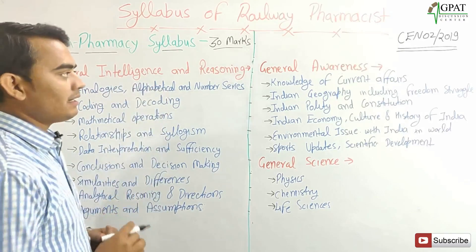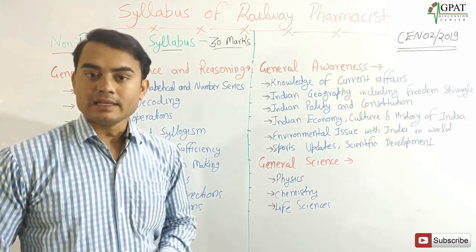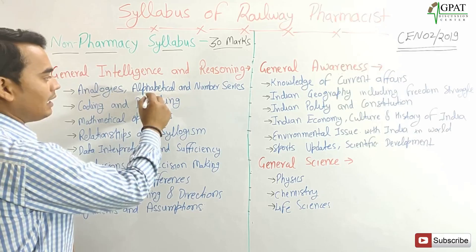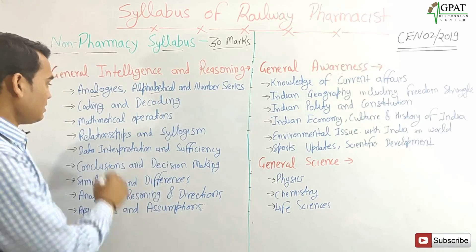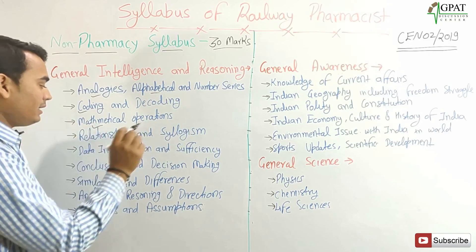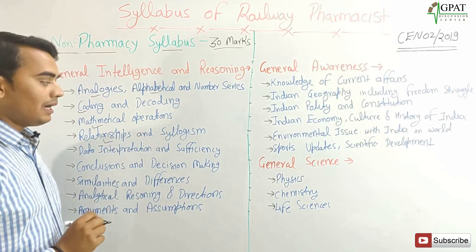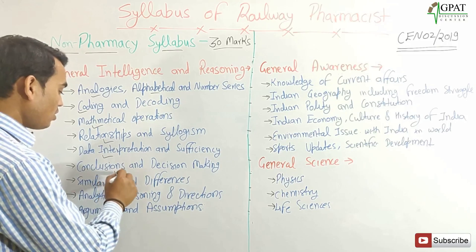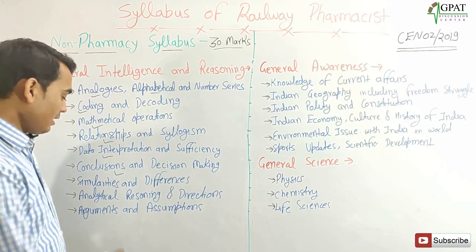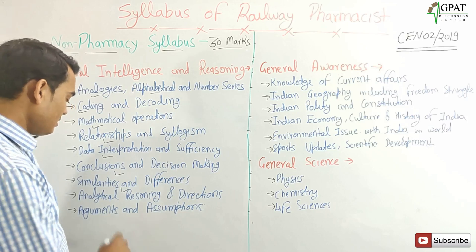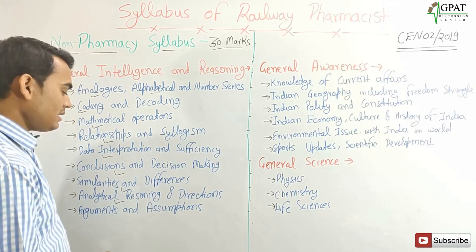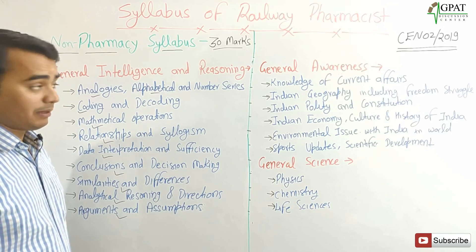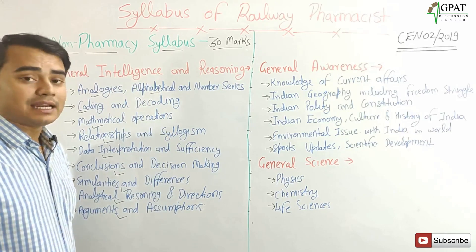Under General Intelligence and Reasoning: Analogies, Alphabetical and Number Series, Coding and Decoding, Mathematical Operations, Relationships and Syllogism, Data Interpretation and Sufficiency, Conclusion and Decision Making, Similarities and Differences, Analytical Reasoning and Directions, and Arguments and Assumptions under Statement. This completes the syllabus for General Intelligence and Reasoning.